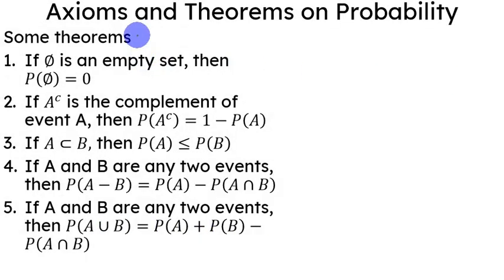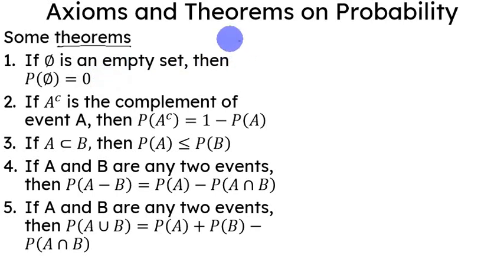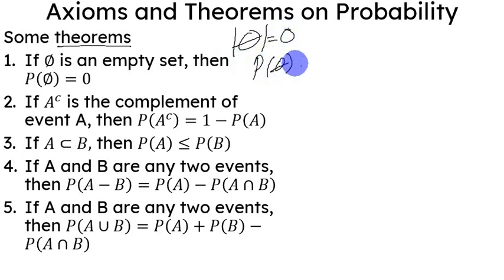Now, some theorems. When we say theorems, these are statements that require proof. But here, we're going to give explanations rather than formal proofs. The first theorem: if this is an empty set, then the probability of an empty set is zero. That is true because the cardinality of the empty set is zero, so following the definition, that would be zero over the cardinality of the sample space, which equals zero.